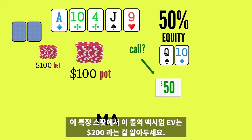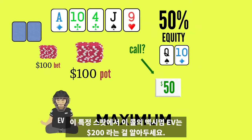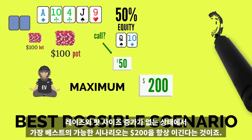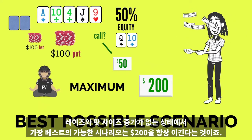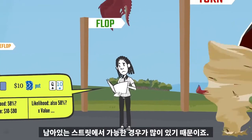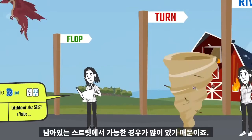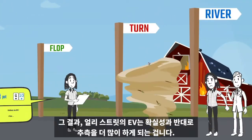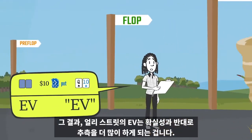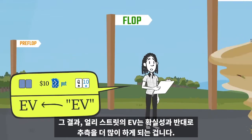Note that in this particular spot, the maximum EV from this call is $200. Without raising and increasing the pot size, the best possible scenario is that we always win that $200 in the pot. On earlier streets, calculations like these are more complicated, because there are so many different possible events on the remaining streets. As a result, EV on earlier streets becomes much more of an estimation as opposed to a certainty.